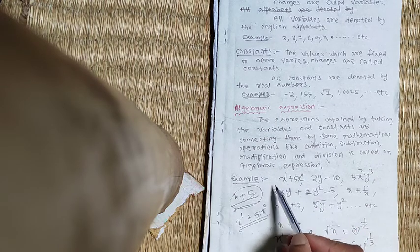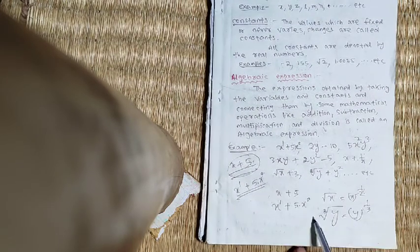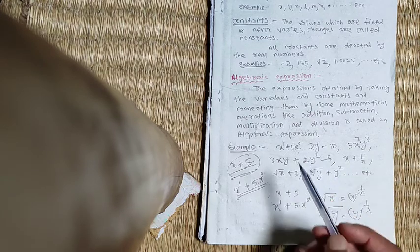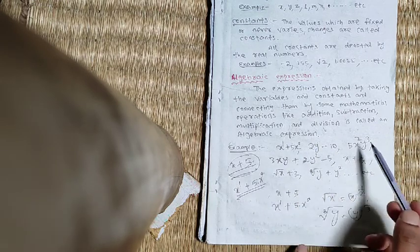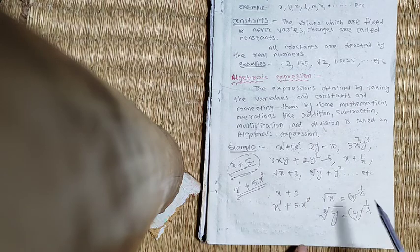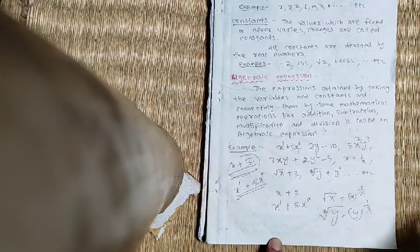Now my question is, the variable what we use, the power is 1, 0. Here is 1, here is 2, here is 3. So here is root over X, means X power half. Here the power is half. Cube root of Y, means Y power 1 by 3. Here the power is 1 by 3. So the power or the exponent of the variable we use may be 0, may be 1, 2, 3, any natural number, or maybe any fraction. So we can say, in algebraic expression, the power of the variable may be any real number.